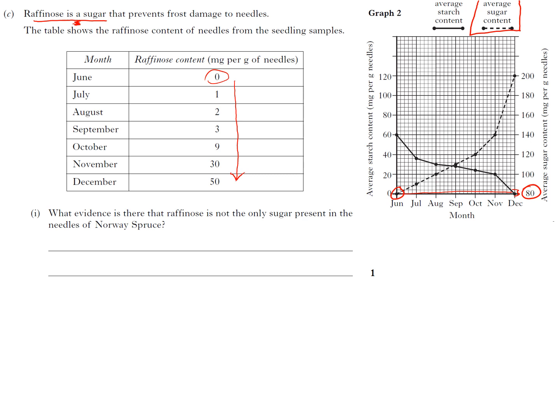So if you have in June, for example, in June you look at the sugar—sugar in June, read it this way—is 80 mg per gram. But in June there is no raffinose, zero mg per gram. And the same is true working through the rest of it. If we take it in December, December has 200 mg per gram of sugar but there's only 50 mg per gram of raffinose, so there must be another 150 mg of other sugars. You pick some data, you back it up.